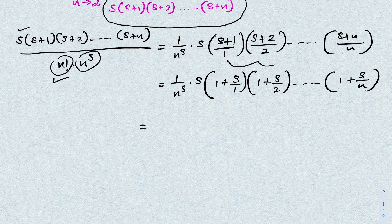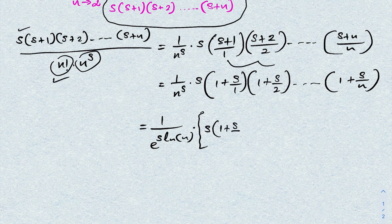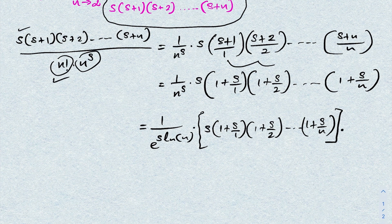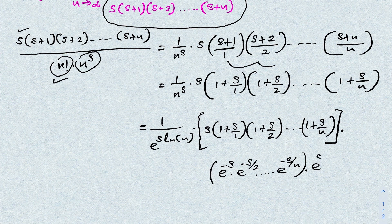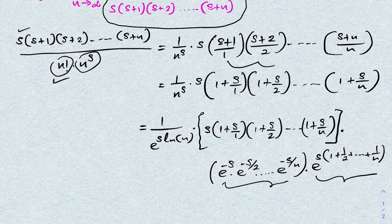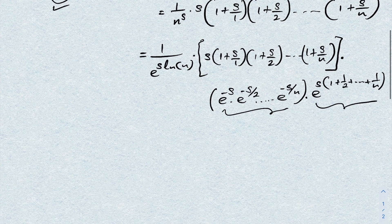Next, we rewrite 1/n^s as n^s = e^(s · ln n), so 1/n^s = e^(−s · ln n). We then multiply by e^(−s) · e^(−s/2) ··· e^(−s/n) and also by the compensating factor e^(s(1 + 1/2 + ··· + 1/n)), so that these two parts cancel each other.